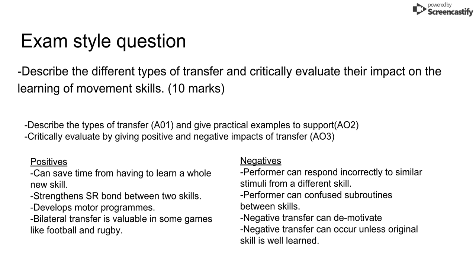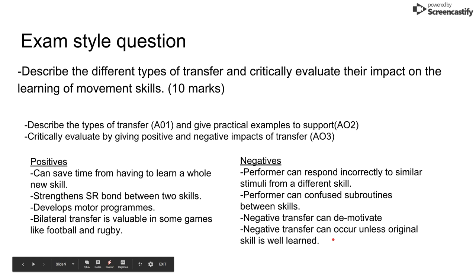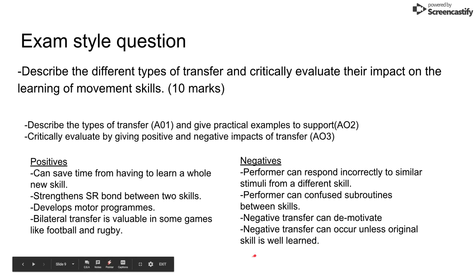For the negatives of transfer: performers can respond incorrectly to similar stimuli from a different skill — like the badminton/tennis example, where a player's wrist-flick technique from badminton may be wrong for a tennis serve. Performers can also confuse subroutines between similar skills. Negative transfer can be demotivating, as the performer realises one skill is having a negative impact on a new skill, forcing them to relearn things they thought were basic. Negative transfer is also more likely to occur unless the original skill is very well learned and well grooved.